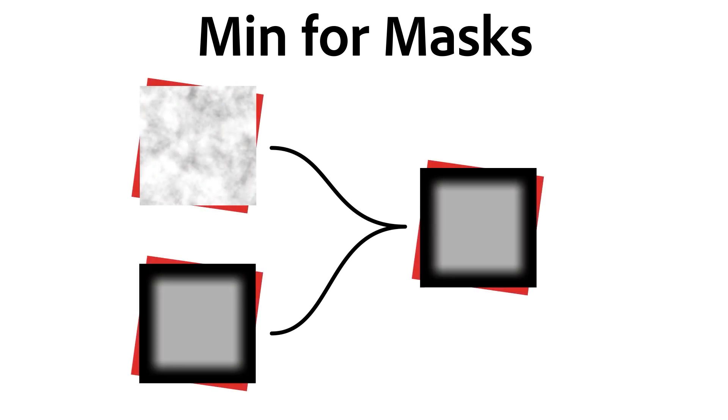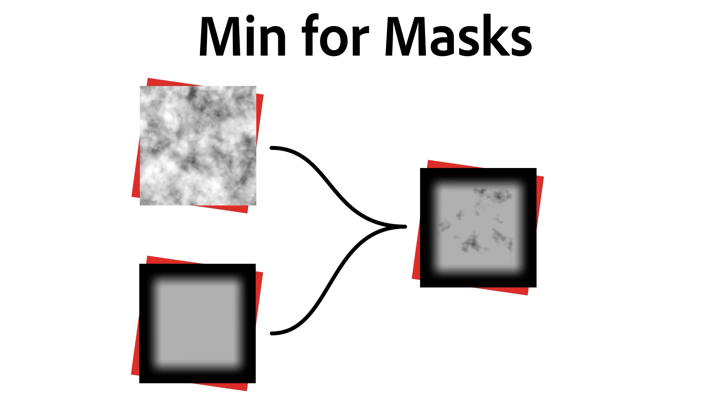Keep in mind, depending on the values, Min can sometimes completely ignore a component if it is too bright. Adjusting the levels of the bright component can help here.